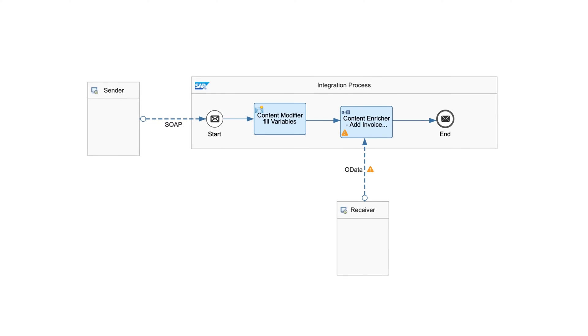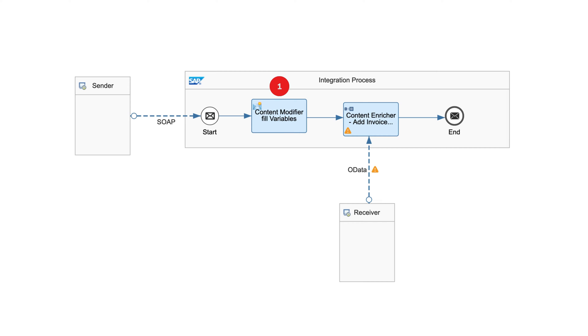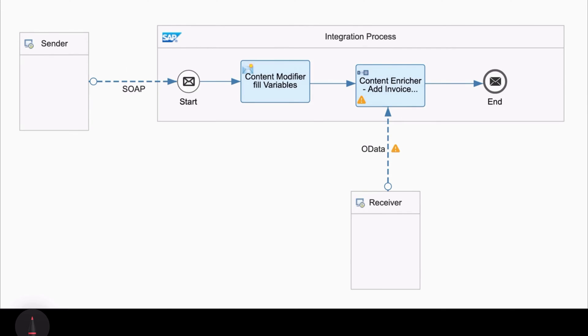Hey guys, welcome to another video. In this video, I am going to cover another palette function which is the enrich palette function. For this video, we'll take a short example in SAP CPI. We'll try to build a sample integration flow by using a content modifier and enrich palette function. I'll try to show you an end-to-end demonstration of how we can use these two palette functions to enrich data in a given integration scenario.